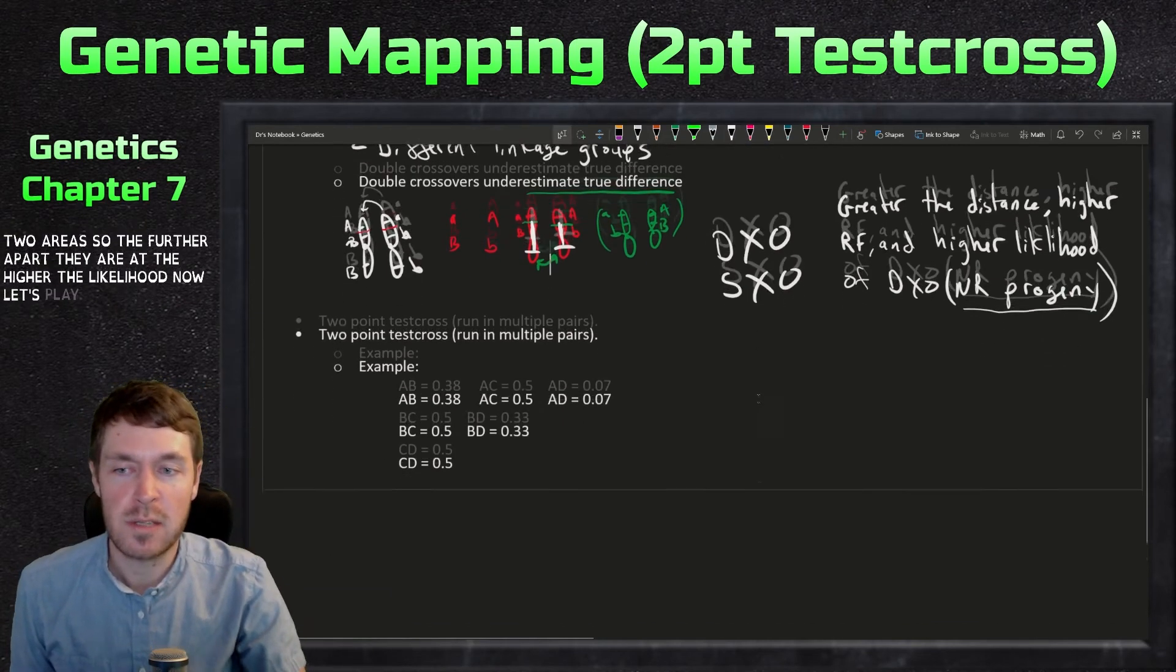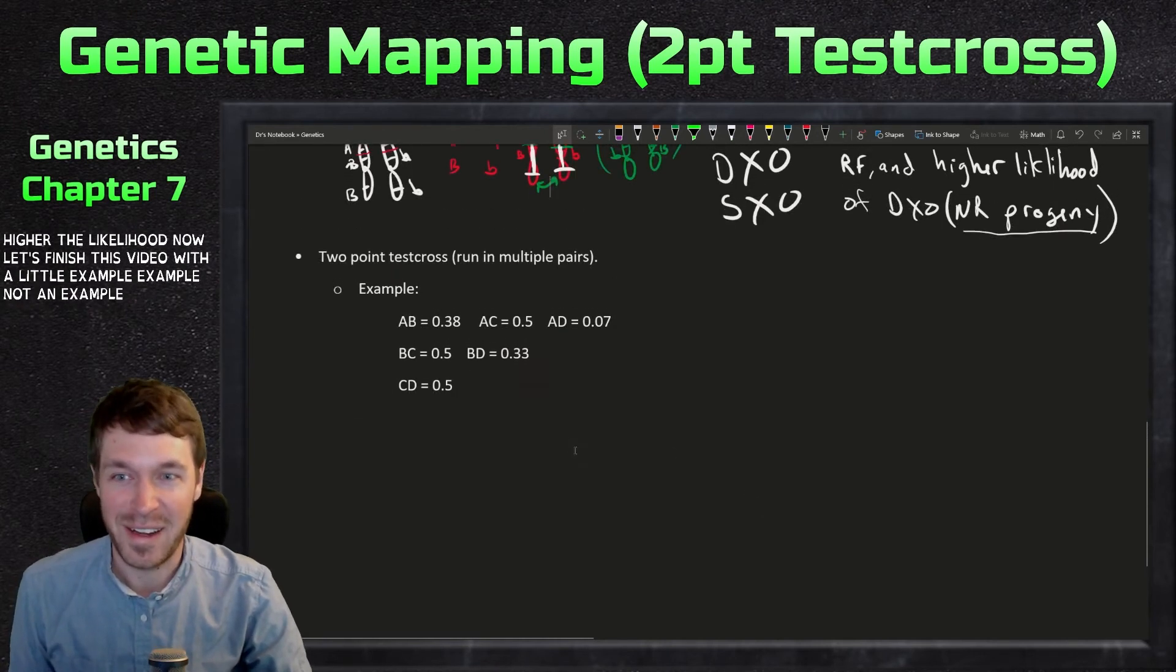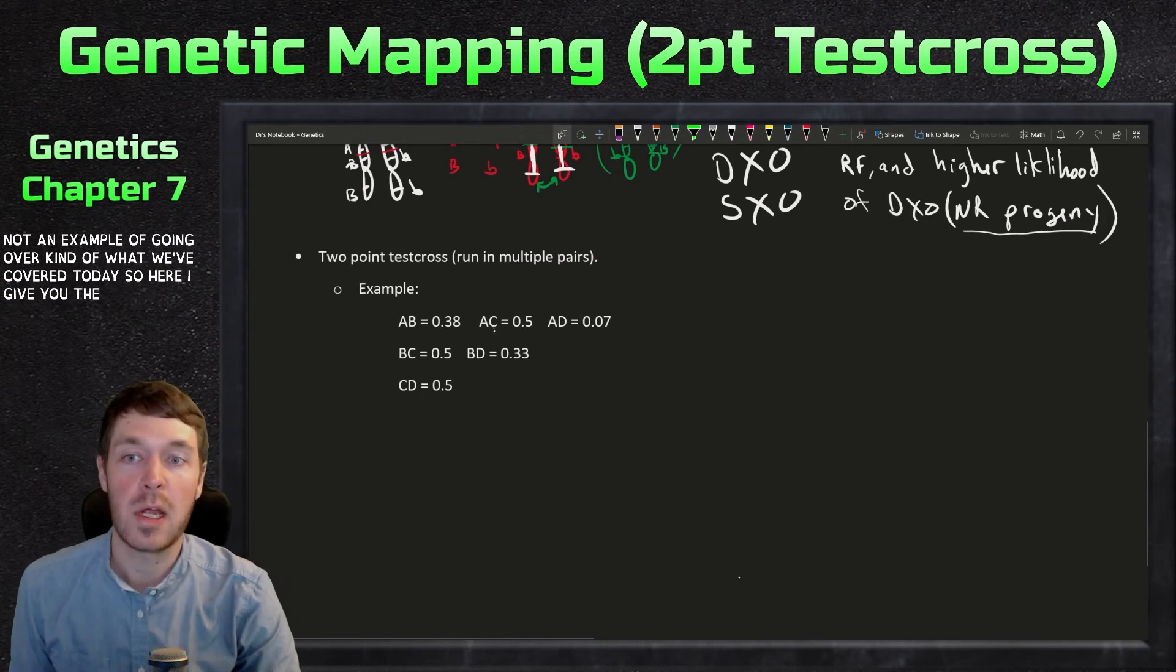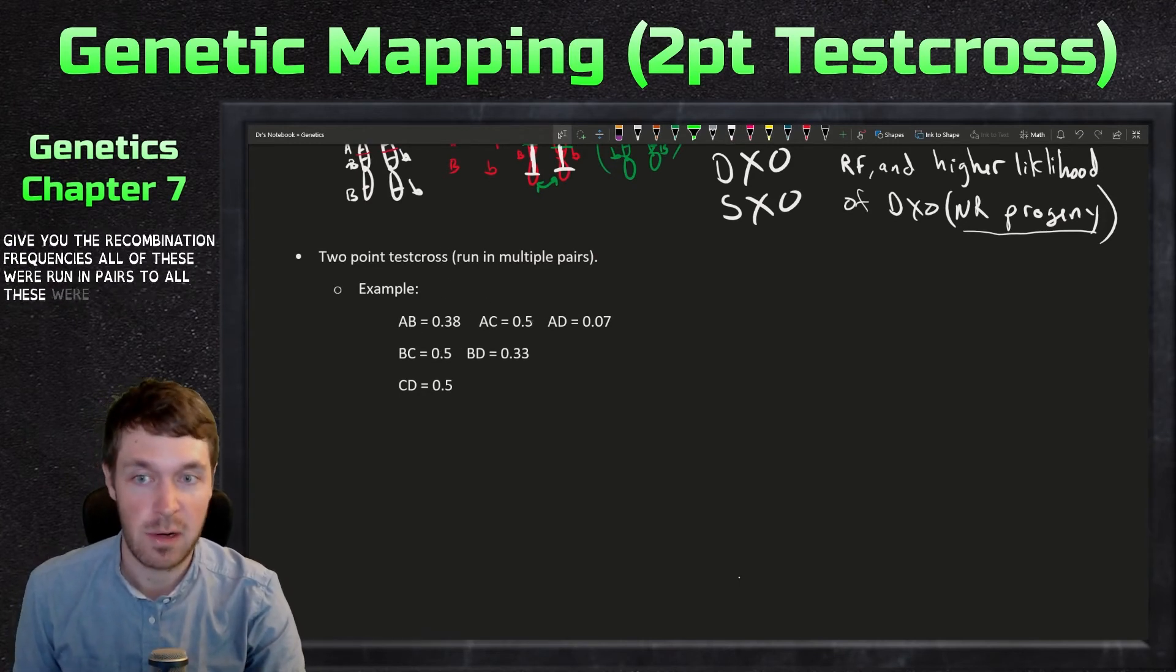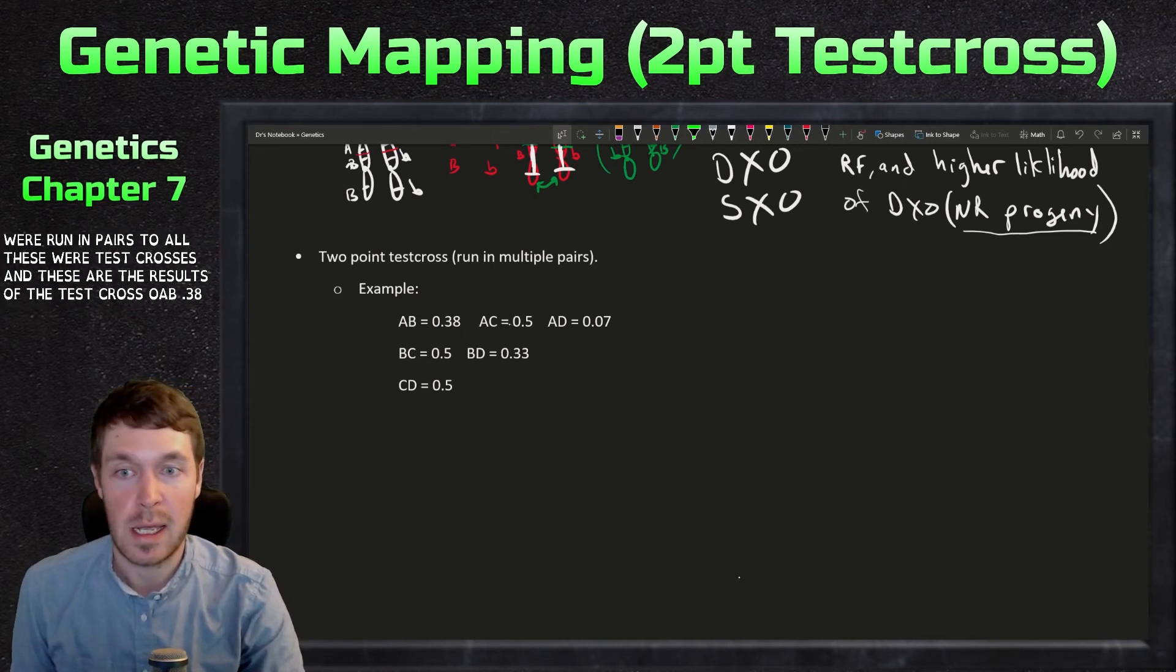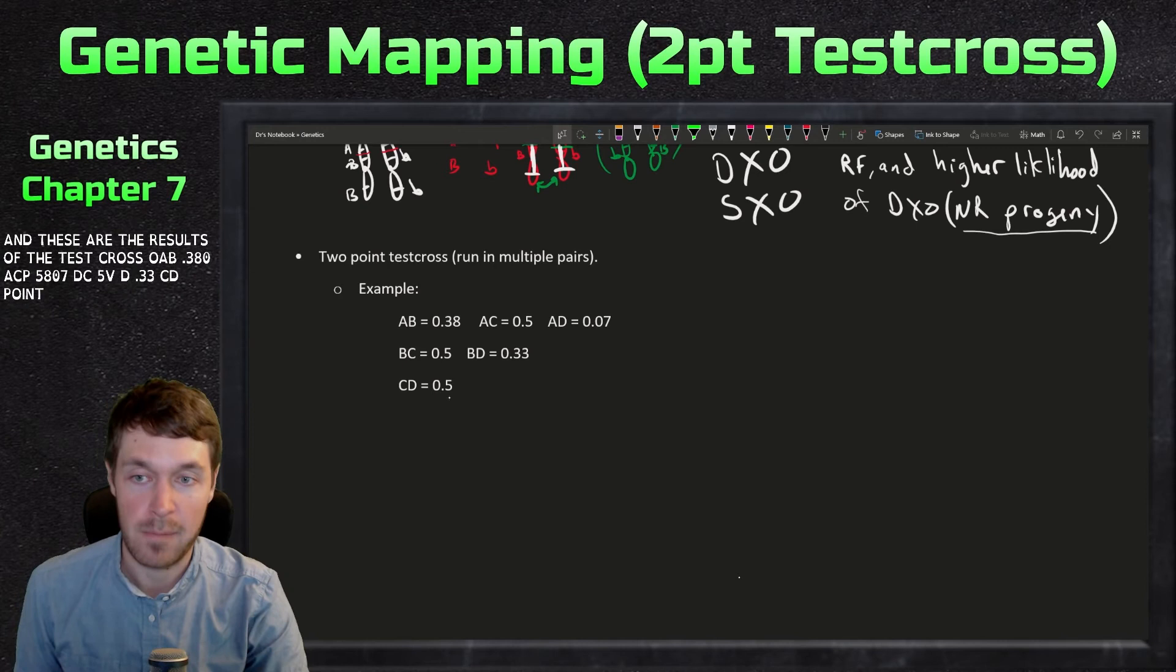Now let's finish this video with a little example, going over kind of what we've covered today. So here I give you the recombination frequencies. All of these were run in pairs. So all these were testcrosses, and these are the results of the testcross. So AB 0.38, AC 0.5, AD 0.07, DC 0.5, BD 0.33, CD 0.5.